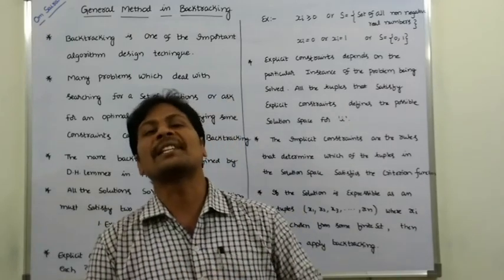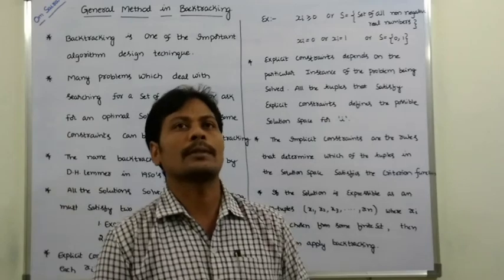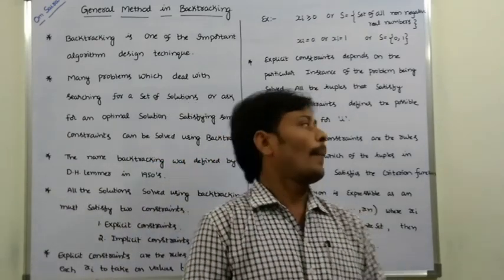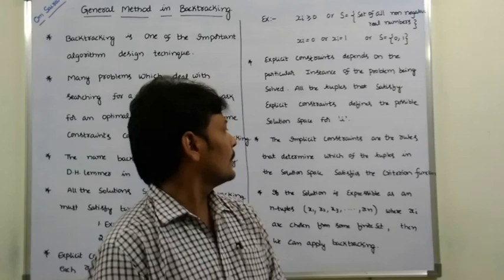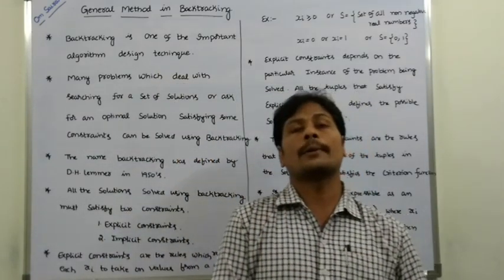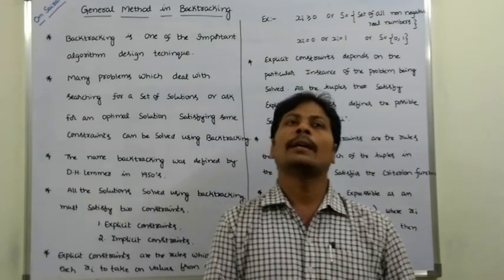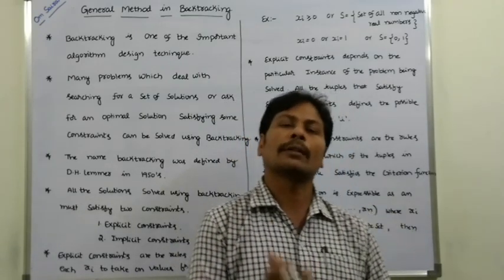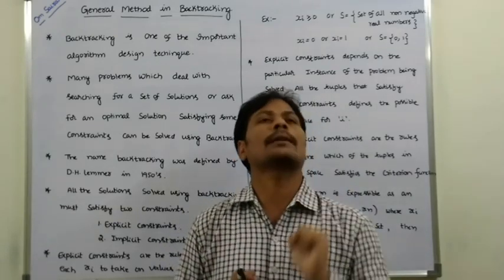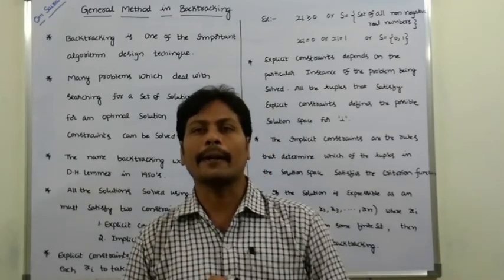The second type is implicit constraints. Implicit constraints are the rules that determine which of the tuples in the solution space satisfies the criteria function.